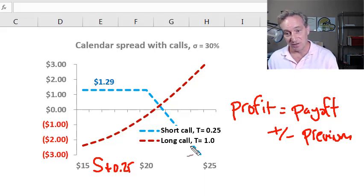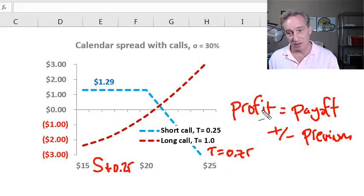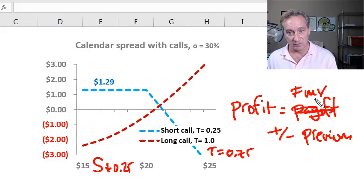So if in three months, we're holding a long call, where it now will then have right nine month maturity, we then sell the long call. And then our profit would be, we can say instead of payoff, we could say fair market value if we sell and then subtract the premium we pay, that's our profit.